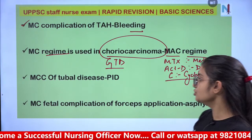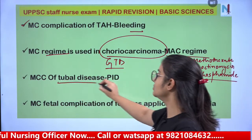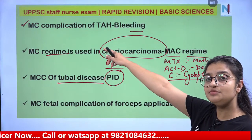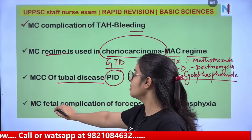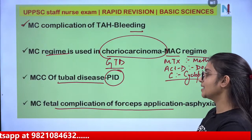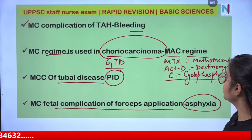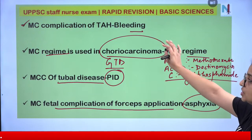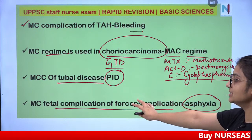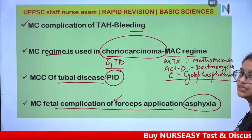The most common cause of tubal disease is PID (pelvic inflammatory disease). The most common fetal complication of forcep application is asphyxia. Note: TAH most common complication is bleeding, tubal disease most common cause is PID, and forcep application most common fetal complication is asphyxia.